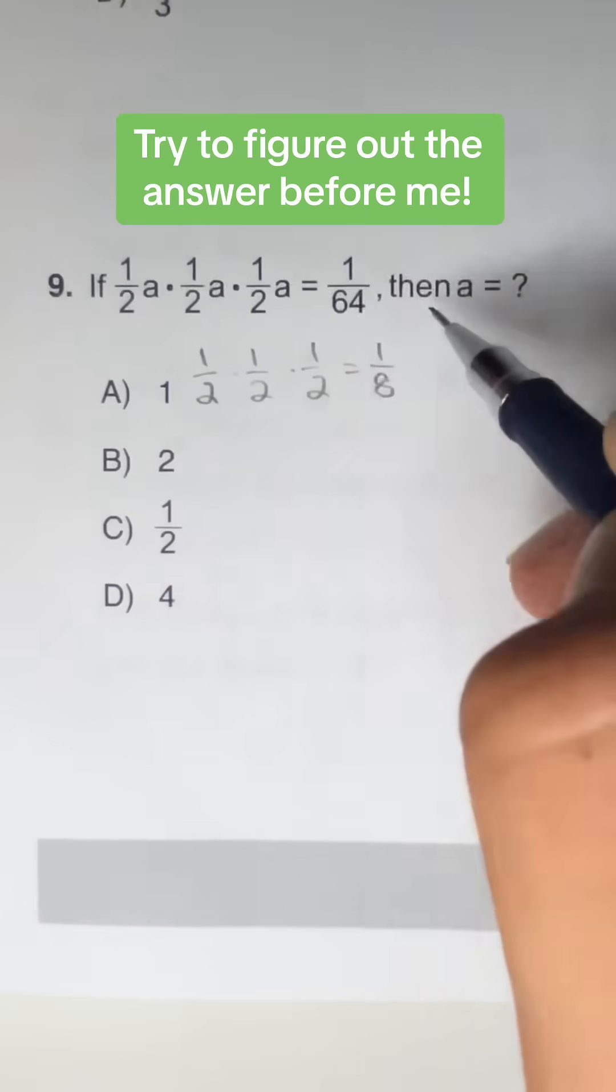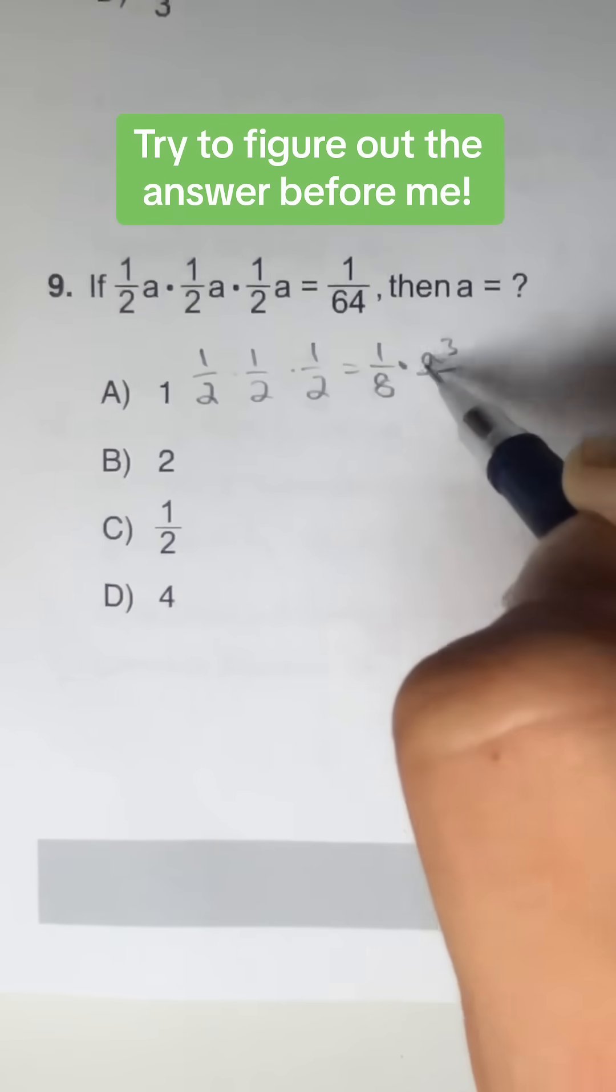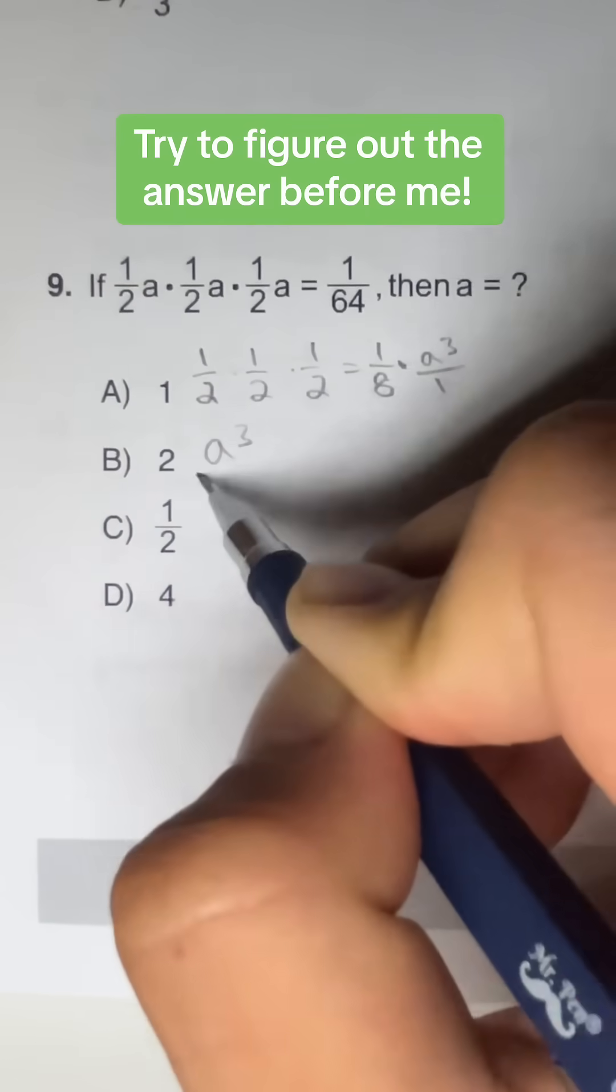And for A, A times A times A is just going to give us A to the third power over 1. We put these together and we have A to the third over 8.